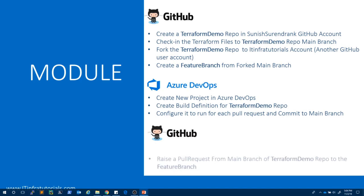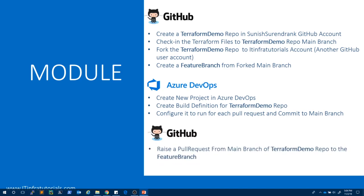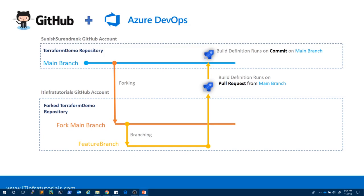The last part covers how to raise a pull request in GitHub, what happens when we raise it, and how the build definition runs behind the scenes on a pull request and commit. So let's see it in action. This is the complete architecture: I have an account called Suneesh Thurindran K in GitHub, and also an account called IT Infra Tutorials, creating a repository called Terraform Demo.